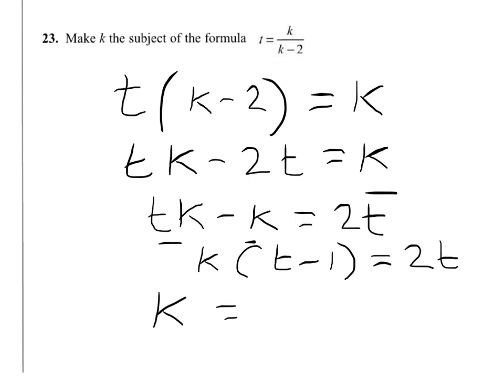We can now move the t minus 1 to the other side. We don't need the brackets, it doesn't matter if we keep them, but we don't need them. And we've made k the subject of the equation.